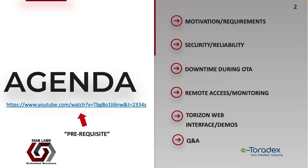Here we see today's agenda. First, we're going to take a closer look at the motivation behind what we're trying to accomplish, specifically formulating a rough set of requirements when managing IoT and Edge devices. Then we'll discuss requirements in more detail including security, reliability, and how to manage downtime during the OTA update process. We'll also discuss remote access and monitoring, and provide an in-depth overview of the Torizon web interface with detailed demonstrations. We highly recommend checking out the previous webinar linked here, since the demos in this webinar are based on those shown there.